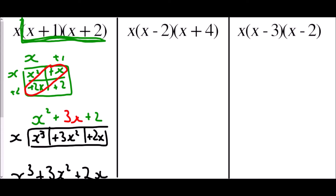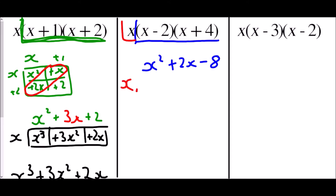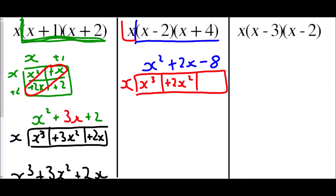For the second one, I'm going to split off and deal with the last two brackets first: x minus 2 and x plus 4. That gives x squared, then negative 2x plus 4x is plus 2x, and negative 2 times positive 4 is negative 8. Now introducing the x term in front, multiplying everything by x: x cubed, plus 2x squared, and negative 8x. So we have x cubed plus 2x squared take away 8x.